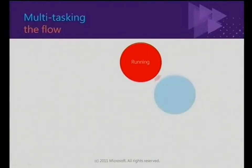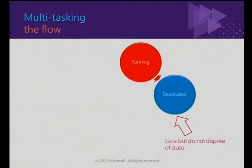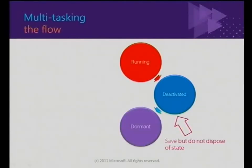Our app starts off in running mode. As Chris was saying, we hit the home button and our app gets deactivated. This gives us a chance to save our state, but we don't dispose any of it — because we can always come back to life and continue running. Once you've saved your state, your app moves into a dormant state where all the threads are slept, and you might come back or you might not. Perhaps just sitting in the background, not doing anything, still in memory.